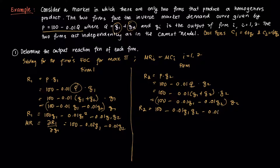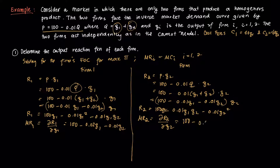MR2 is the partial derivative of R2 with respect to Q2, which gives MR2 = 100 − 0.02Q2 − 0.01Q1. The two marginal revenue functions are symmetric.